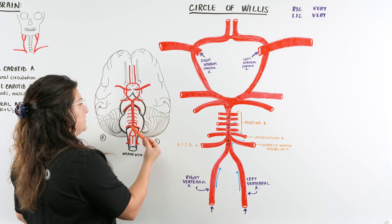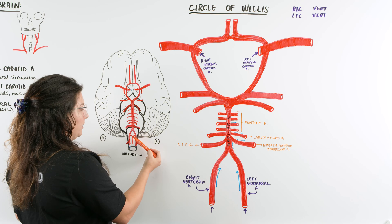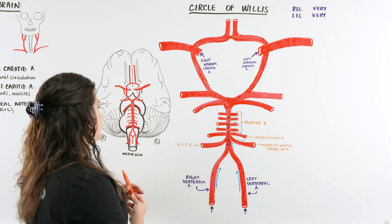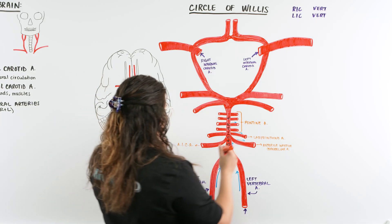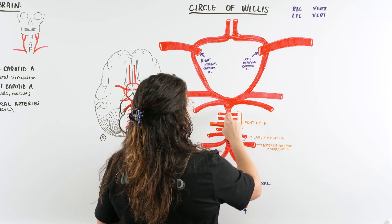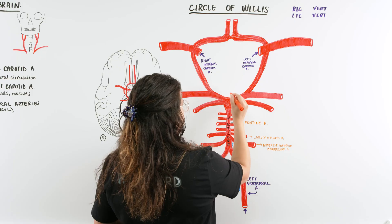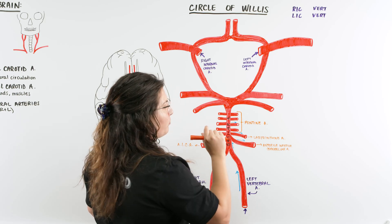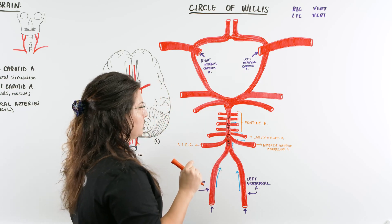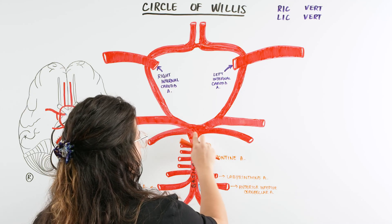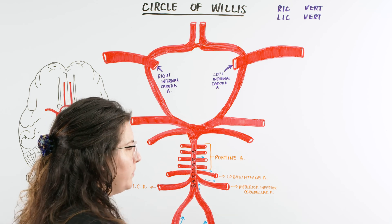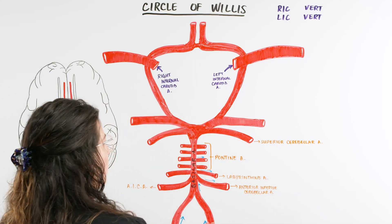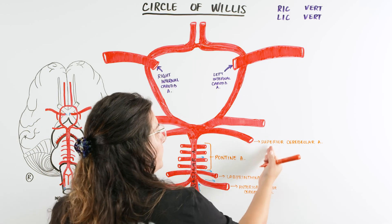Ascending further, we have a set of pontine arteries, which help deliver blood to the pons — which makes sense. Looking at the diagram, we can see the midbrain, pons, and medulla oblongata, with those small vessels coming off inferior to the pons to deliver blood there. Continuing up the basilar artery, the next branches are the superior cerebellar arteries, which allow blood flow to reach the superior cerebellum.